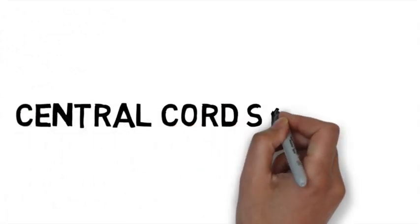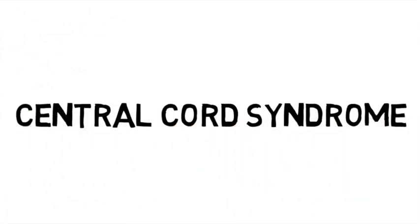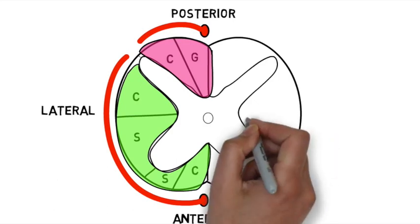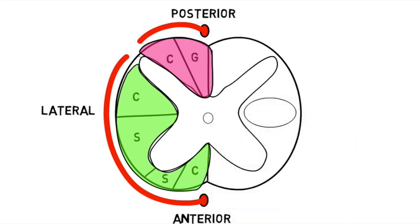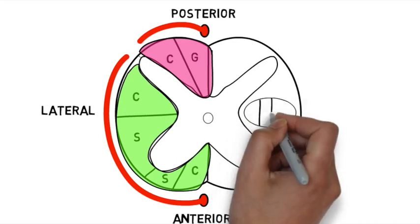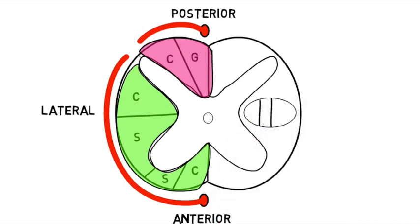Next we have central cord syndrome. To understand the syndrome, you need to understand the topography of the corticospinal tracts. So we draw this on the right-hand side of the cord. Split it into four, and then label it CTLS, or if you want to remember it another way, ATLS.